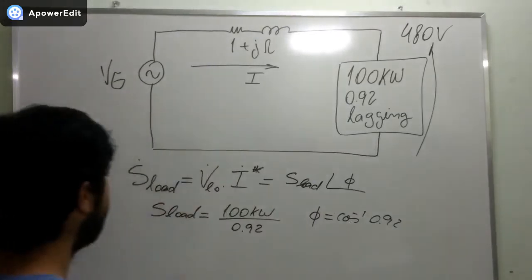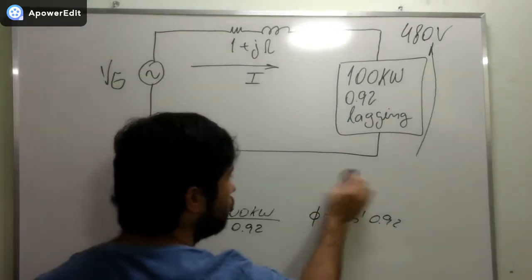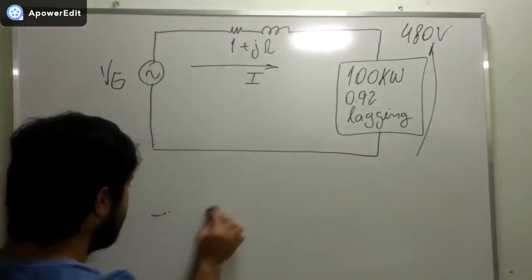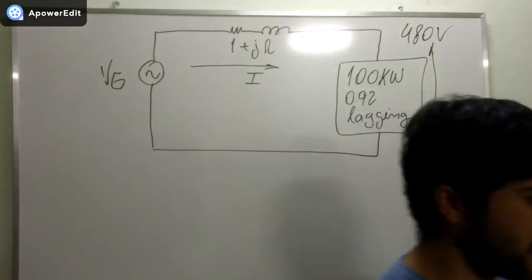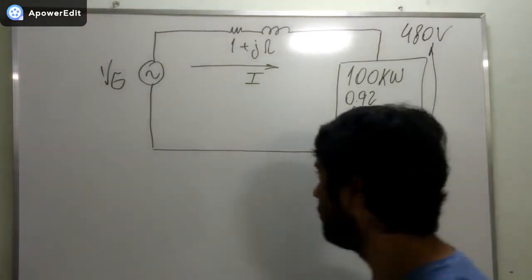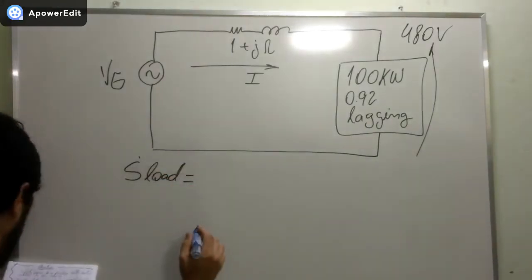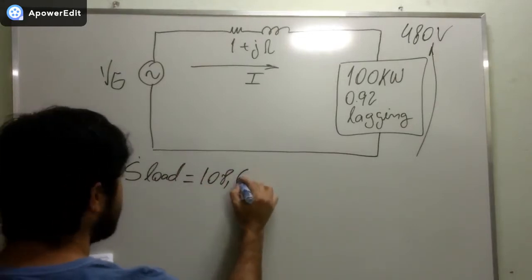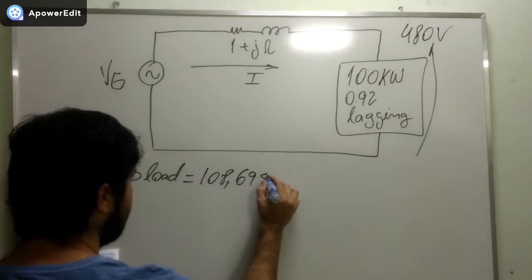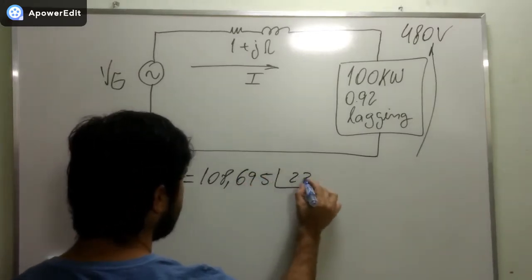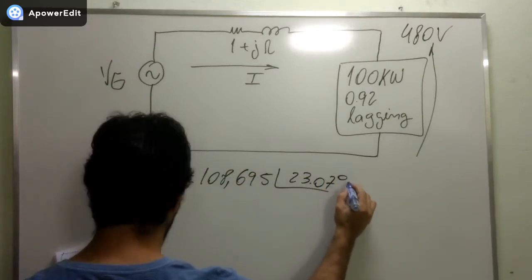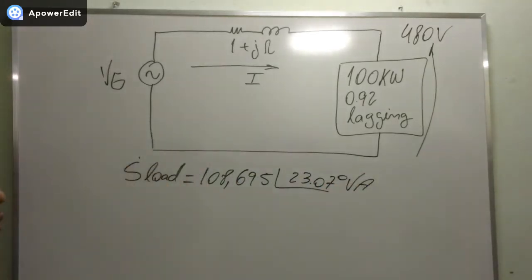I already calculated it and found that the complex power consumed by the load is equal to 108,695 ∠23.07° volt-amperes. I want you guys to try it out for yourselves and check if my calculation is right.